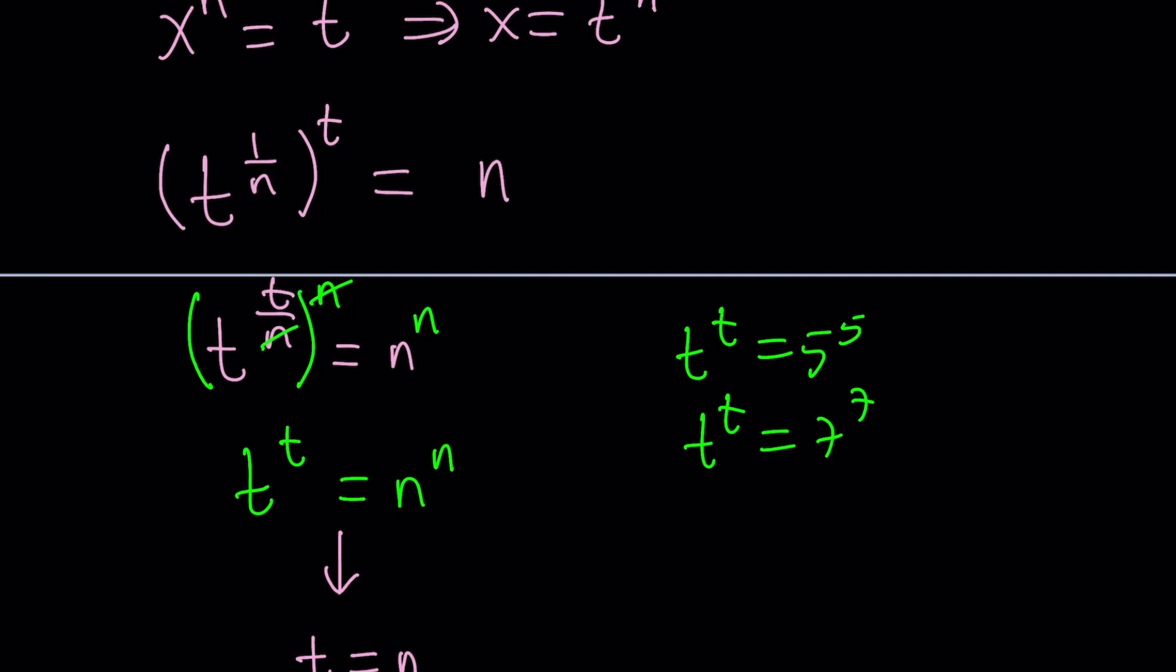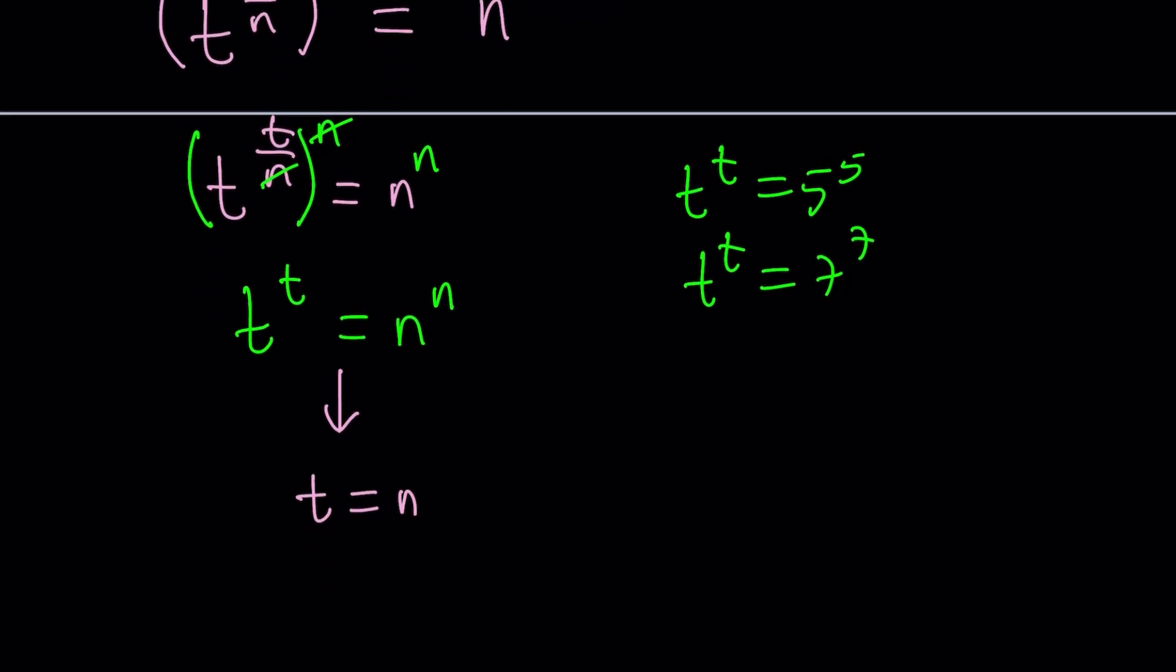But the question is, and that's a million dollar question, maybe a billion dollar question, is that the only solution? So we're going to look at it from two perspectives. First of all, a little bit of calculus. Don't be scared. We're just going to take derivatives, make a table, look at the behavior, and then we're going to look at the graph of the function.